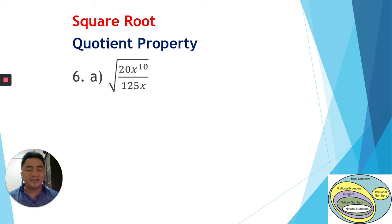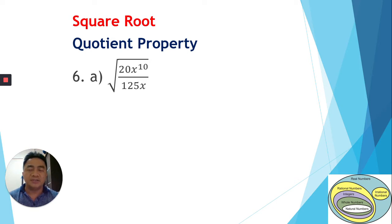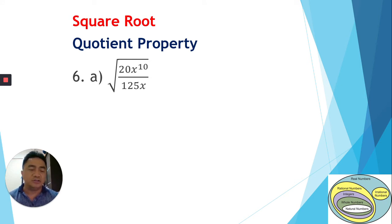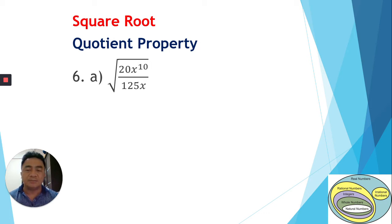Hello, good morning once again, my dear students. How are you today? I hope you're doing good. Today we're going to continue our topic about square root — this one is using the quotient property. So we divide. We're going to get the square root of an expression having a division. The method is division. We have here our first example: the square root of 20x to the power 10 over 125x.